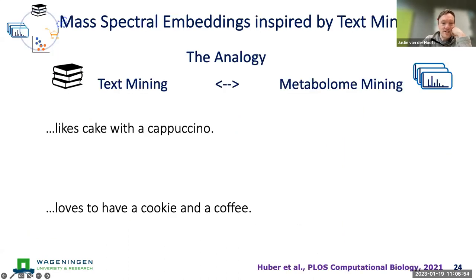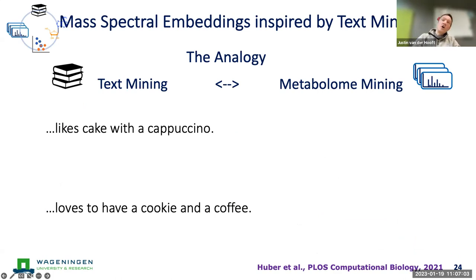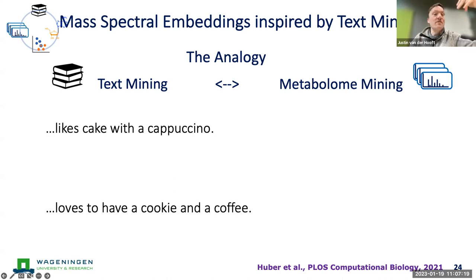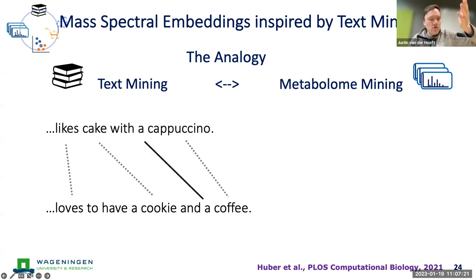Most currently used mass spectral similarity scores — the cosine score, modified cosine score, normalized dot product — all rely on fragment overlap: they look for fragments in common, and the more and more abundant they are, the higher the score. But with just two or three or four subtle modifications, this kind of overlap can vanish very quickly. That is why Justin's group is investigating alternative ways of computing spectral similarity. The idea, using an analogy to text mining as for MS2LDA, is that two sentences can mean the same thing without sharing the exact same words — similar to how the meaning correspondence between 'lies' and 'loves,' or 'cake' and 'cookie,' can be captured without exact word overlap.